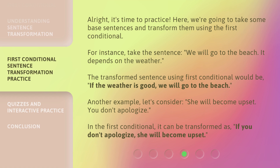It's time to practice. We're going to take some base sentences and transform them using the First Conditional. For instance, take the sentence: 'We will go to the beach. It depends on the weather.' The transformed sentence using First Conditional would be: 'If the weather is good, we will go to the beach.' Another example — consider: 'She will become upset. You don't apologize.' In the First Conditional, it can be transformed as: 'If you don't apologize, she will become upset.'